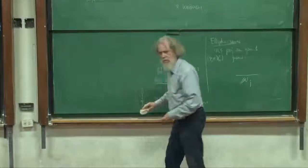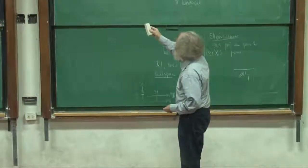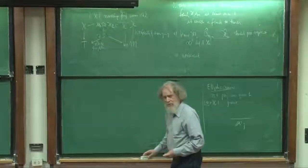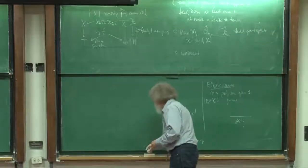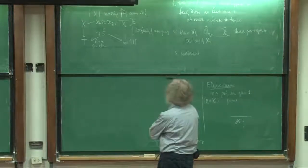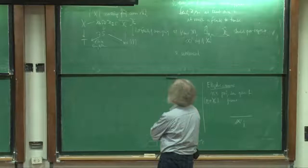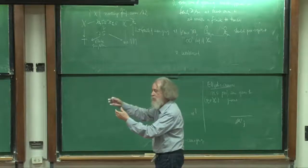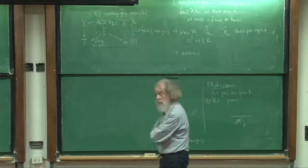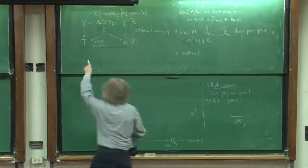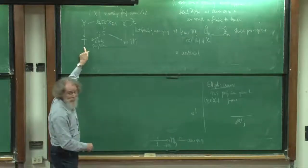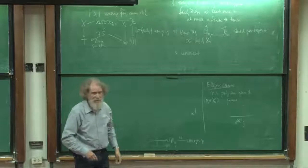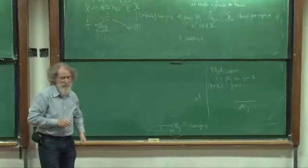Let me sketch why there exists a modular family of curves of genus g. The hard part is pro-representability. Once you know the local functor is pro-representable, the existence of the modular family is not so bad. Take any curve of genus g and take the tricanonical embedding: take the sheaf of differentials Ω_X tensored with itself three times. That's a very ample bundle, giving an embedding of X into a projective space P^N where N is the dimension of the global sections — something like 5g minus 5. The virtue of the tricanonical embedding is that it works for every curve of genus g at least 2.